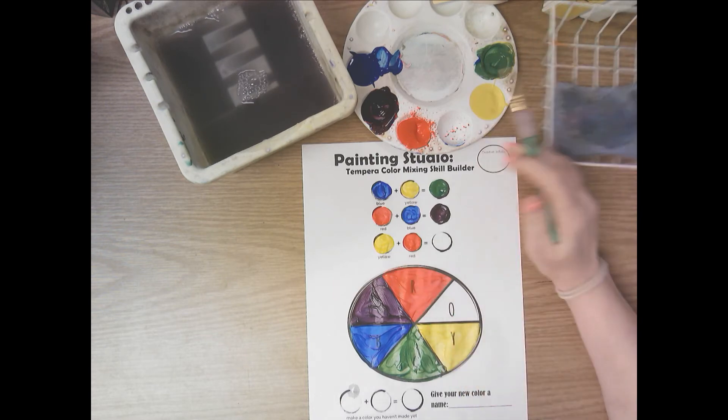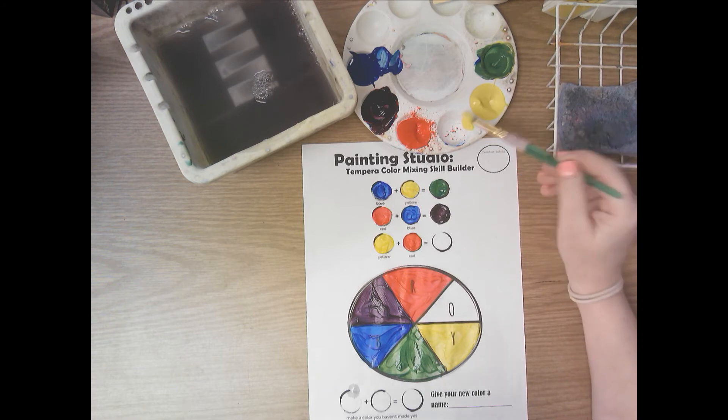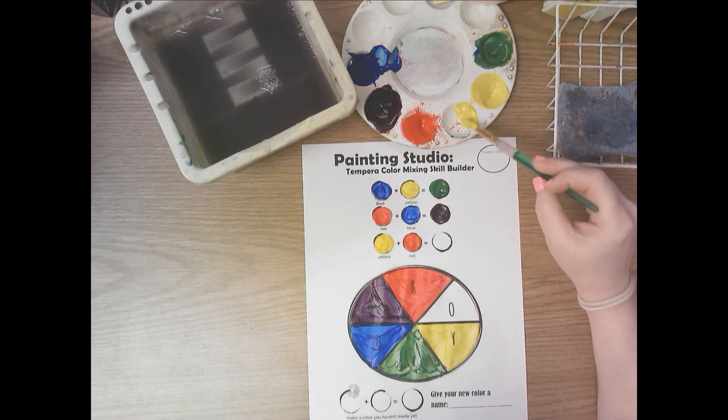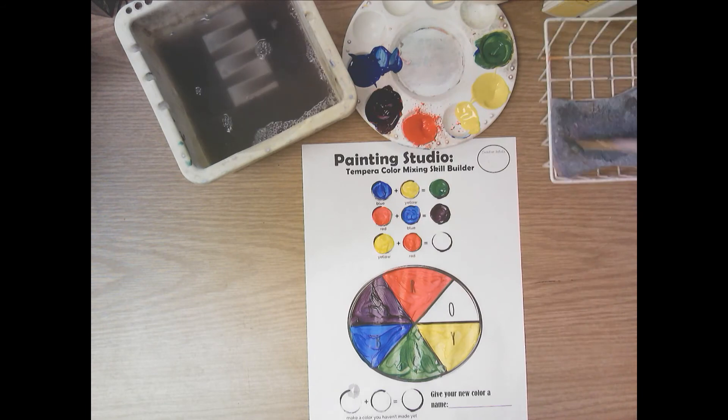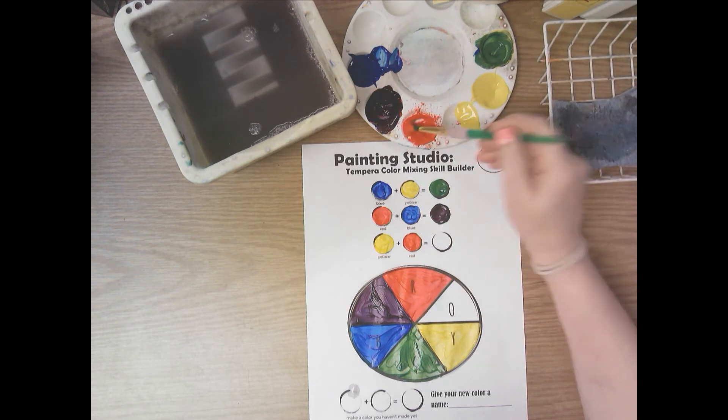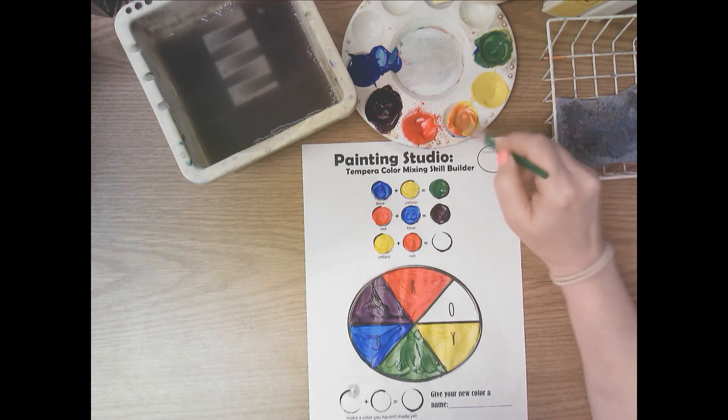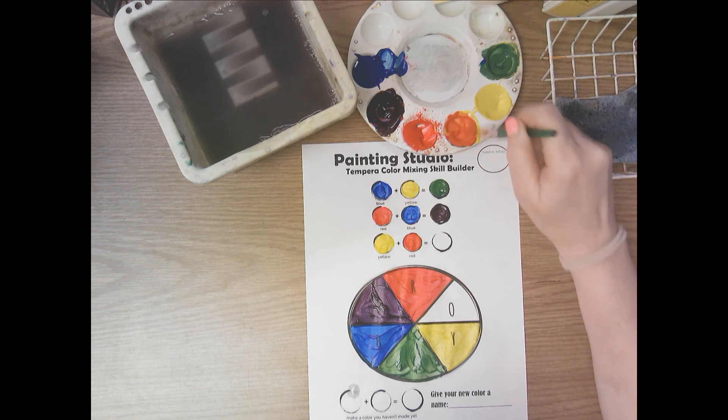And then the last one is yellow and red. So remember, you need more of the lighter color. Yellow is always the lighter color. If you're mixing yellow with anything else, it's always the lighter color. Dry my paintbrush off. Get some red. And then the last secondary color is orange.